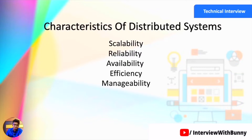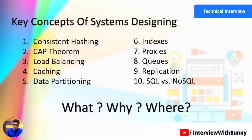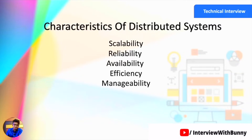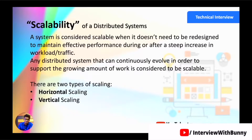Before understanding all the key concepts of system designing, you first need to understand the characteristics of a distributed system — why we actually need things like MongoDB and various database structures to make a distributed system. Once you are clear with the proper structure of a distributed system, we can go in depth into caching policies, load balancing, data partitioning, and everything else. So let's start with today's topic: understanding the characteristics of a distributed system.